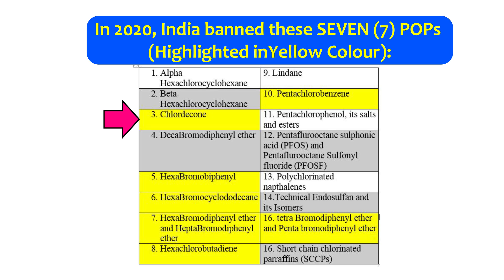The seven POPs banned in India are: Chlordecone, Hexabromobiphenyls, Hexabromocyclododecane, Hexabromodiphenyl ether and Heptabromodiphenyl ether, Hexachlorobutadiene, Pentachlorobenzene, and Tetrabromodiphenyl ether and Pentabromodiphenyl ether.